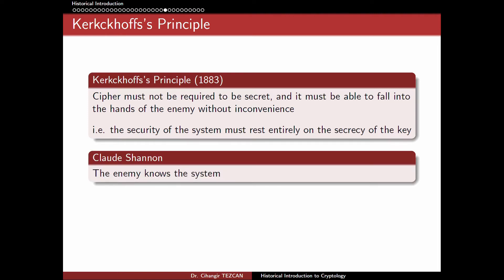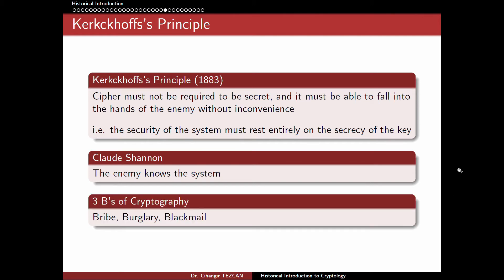This principle is also used by Shannon, but he used different words, saying 'the enemy knows the system.' This is actually realistic because we call the following the three B's of cryptography: bribe, burglary, and blackmail. Because of these, it is always plausible to assume that the algorithm you are trying to keep secret can fall into the hands of the enemy.